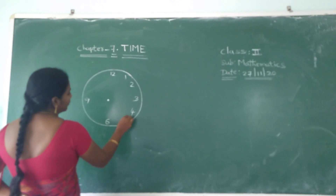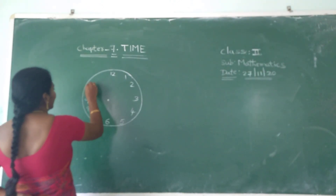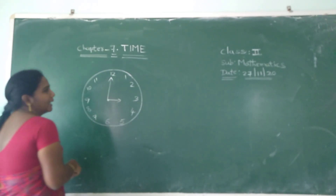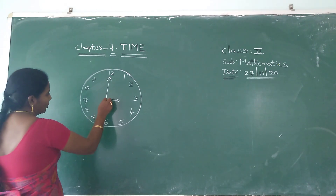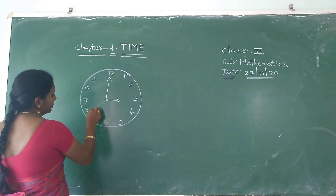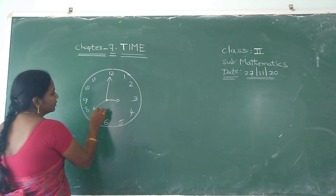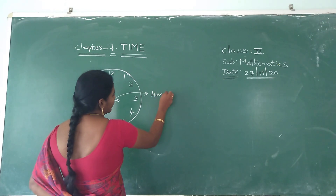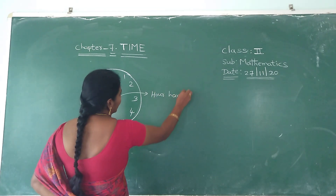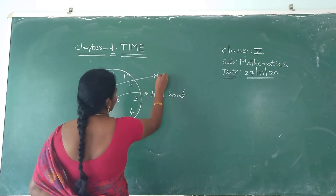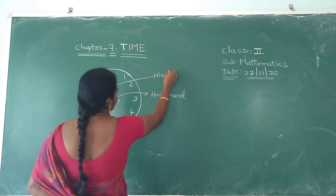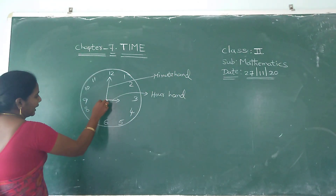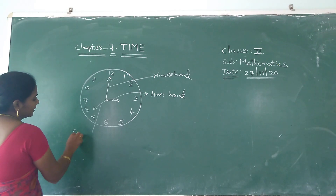In the clock, 1 to 12 numbers are there. So how many hands are there? 3 hands. Short hand is known as hour's hand. Long hand is known as minute's hand. And the thin hand is known as second's hand.